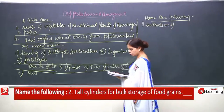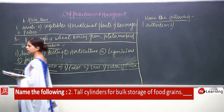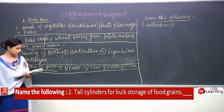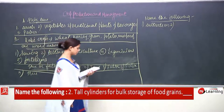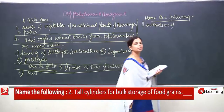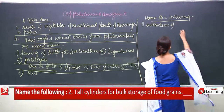Number 2: tall cylinders for bulk storage of food grains are known as silos.